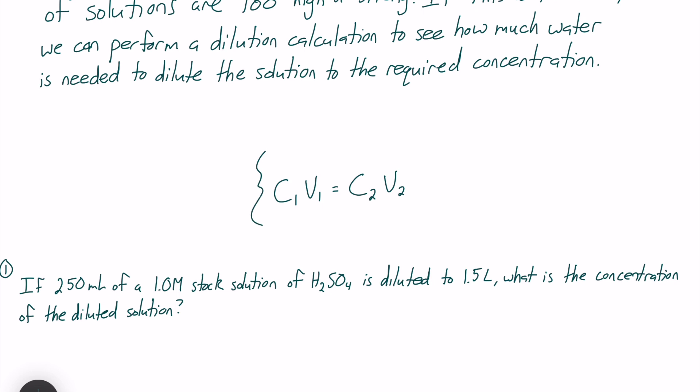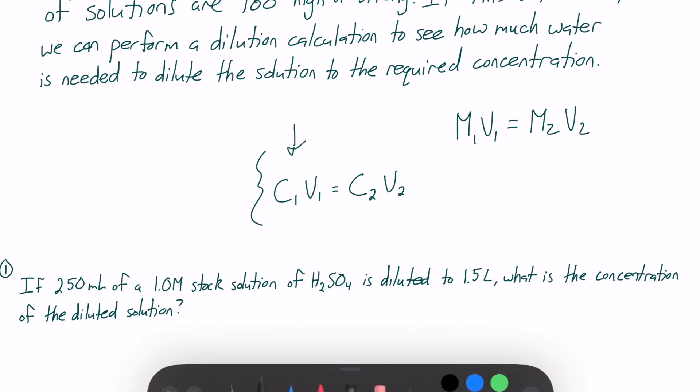We have C1V1 equals C2V2. You may also see something like M1V1 equals M2V2. These mean the exact same thing, but we're going to look at C1V1 equals C2V2 today.